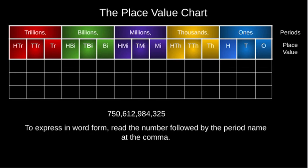So we have a number here that we're going to arrange and organize into the place value chart. To express any number in word form, we need to read the number followed by the period name when we see the comma. Read the number as a whole, and whenever we see the comma, we call out the period name of that number. Let's put this number into the place value chart and then see how we can read it.